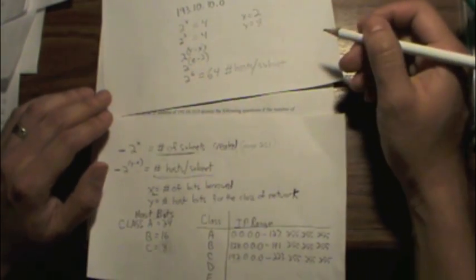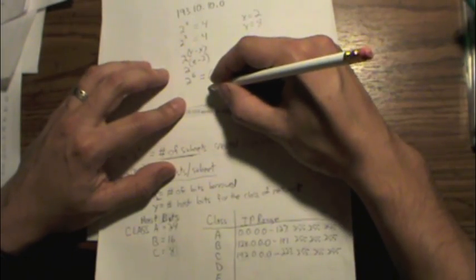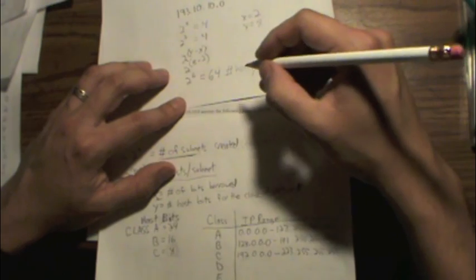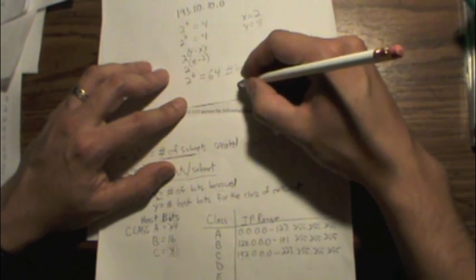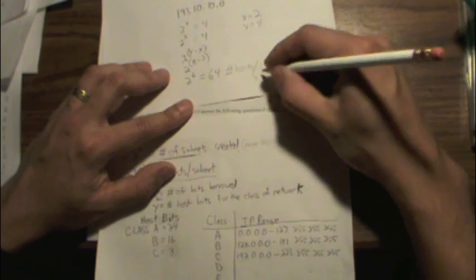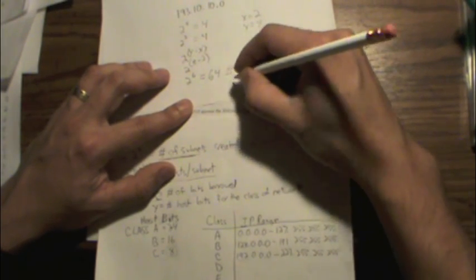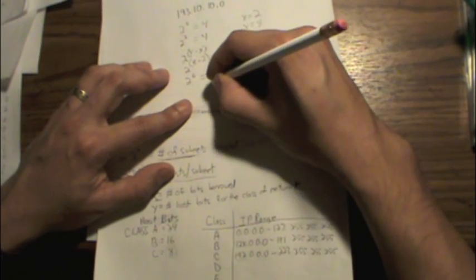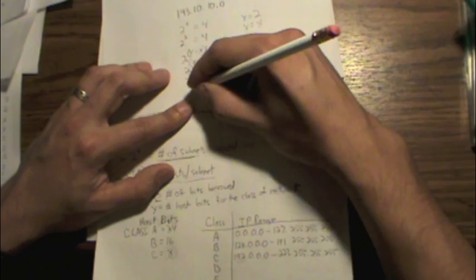So all we're going to do is, we know we're dealing with a class C network. We're going to go ahead and write out our last octet here, which is 1, 2, 4, 8, 16, 32, 64, 128.